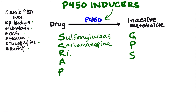R stands for rifampin. We don't see this one as much in the U.S. because it is primarily used for tuberculosis. It's occasionally used in some opportunistic diseases for AIDS and has some usefulness in the treatment of Legionnaires' disease, but usually you'll see it in the treatment of tuberculosis.